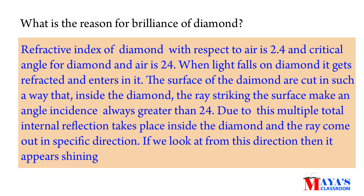The refractive index of diamond with respect to air is 2.4 and the critical angle for diamond and air is 24 degrees. When light falls on a diamond it gets refracted and enters into it. The surfaces of the diamond are cut in such a way that inside the diamond the ray striking the surface makes an angle of incidence always greater than the critical angle, that is 24 degrees. Due to this, multiple Total Internal Reflections take place inside the diamond and the ray comes out in a specific direction, making it appear shining.